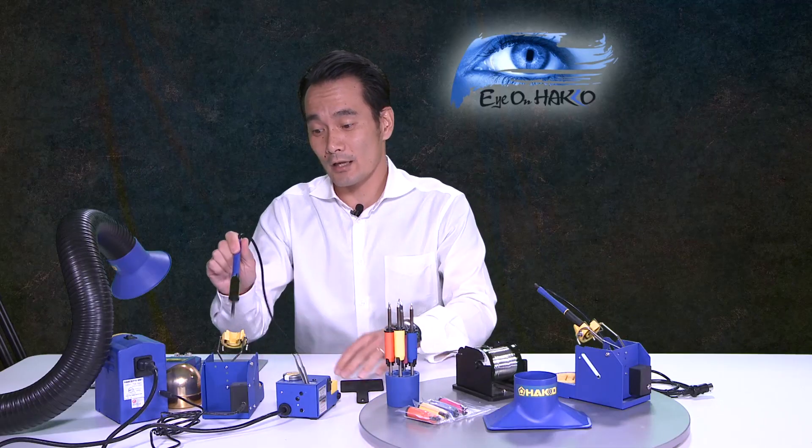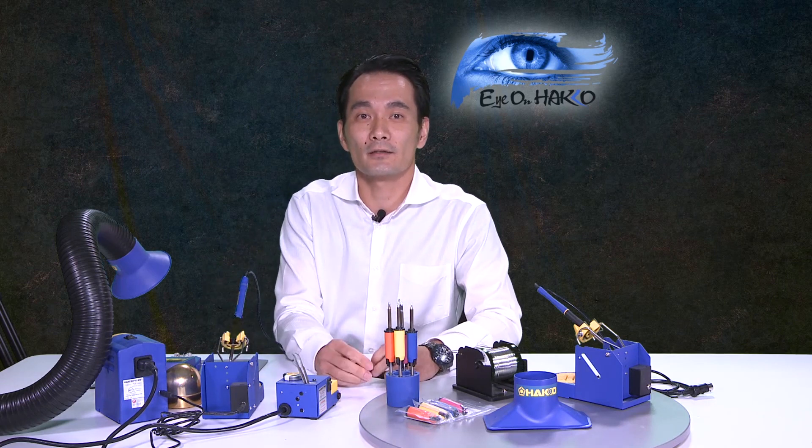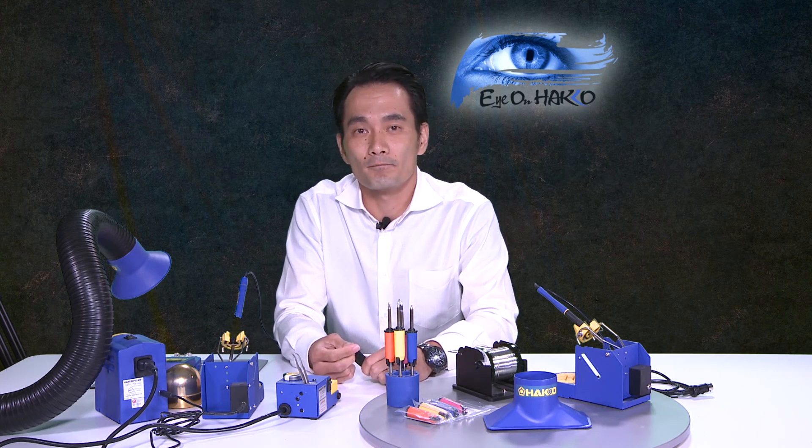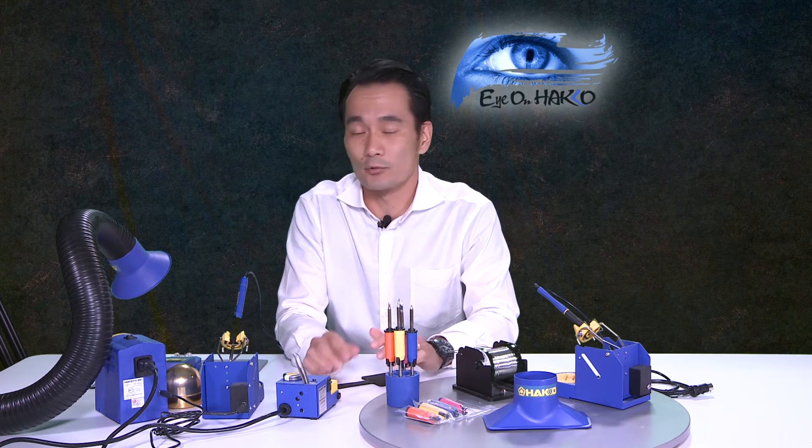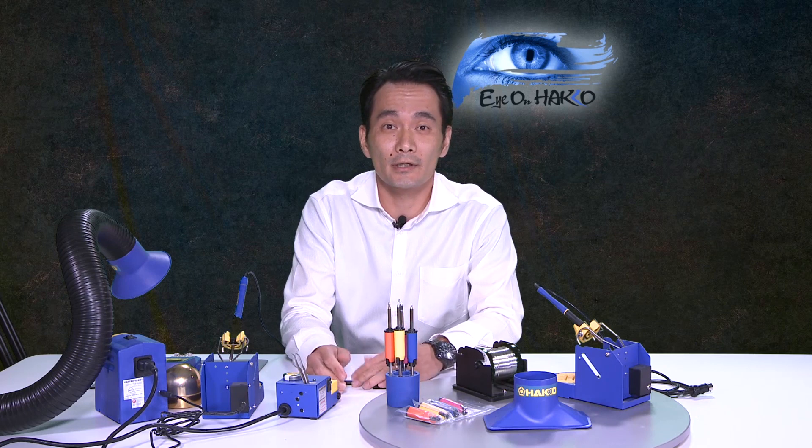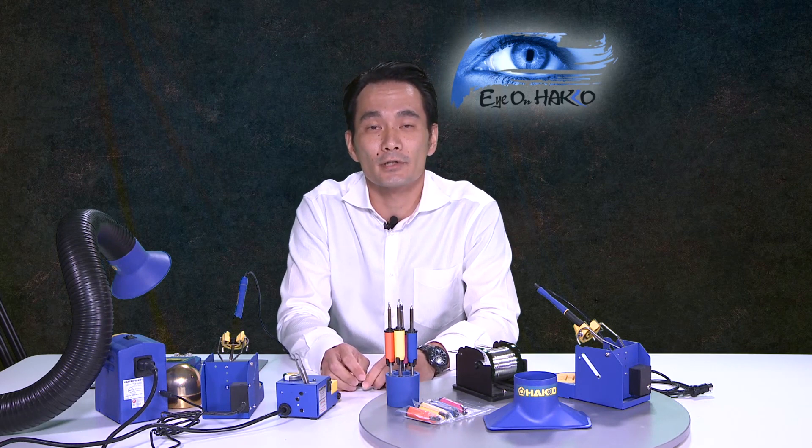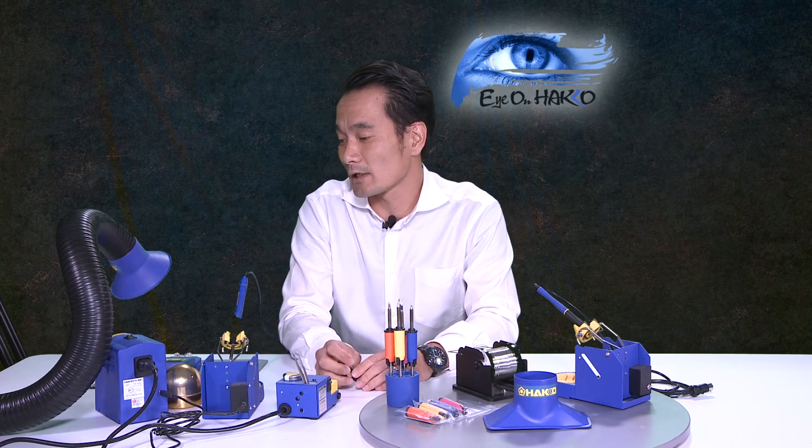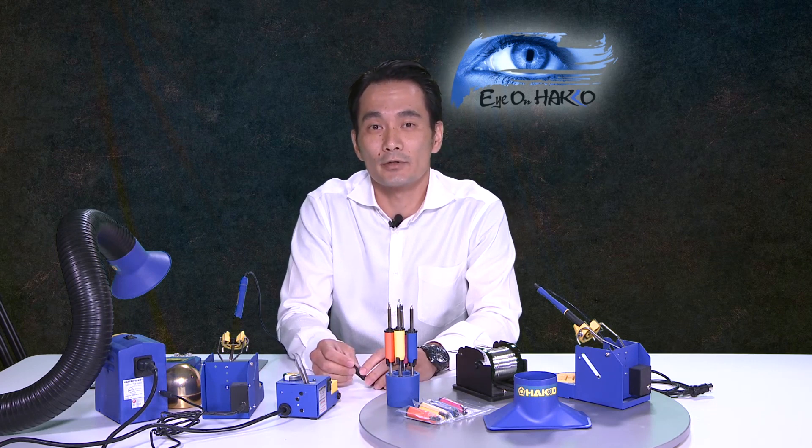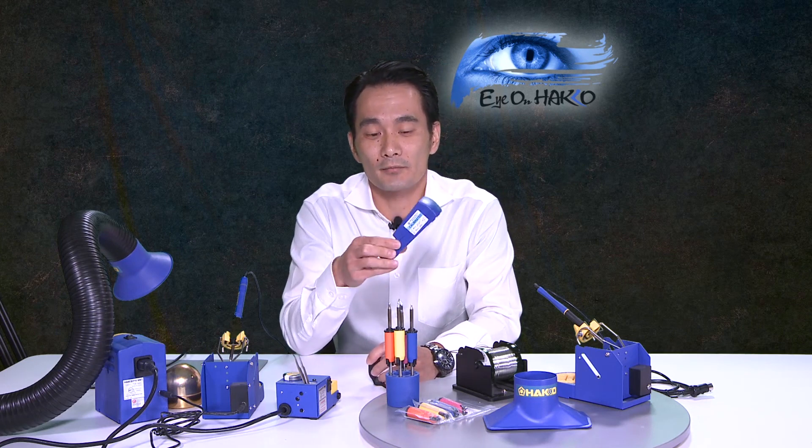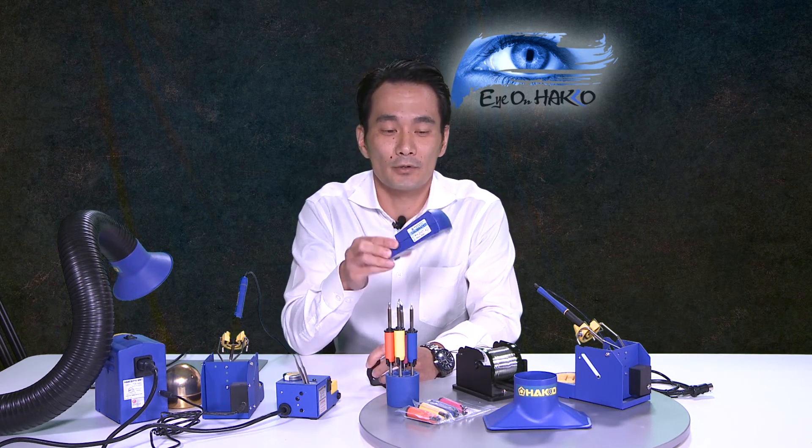That's what I wanted to go over today. FX-951 being a very popular station, I just wanted to make sure people understand how to operate it, how to set the temperature, how and when to use the offsets, and how to get into the system parameters. One thing I forgot to mention is that if you're going to make use of the offset feature, it's very important to have one of these tip thermometers, FG-100B, to verify your tip temperatures.